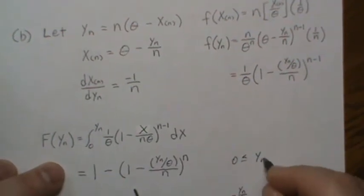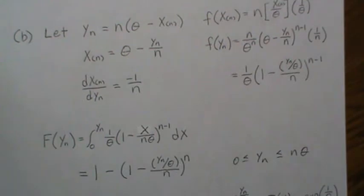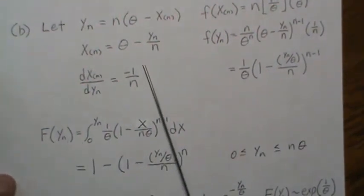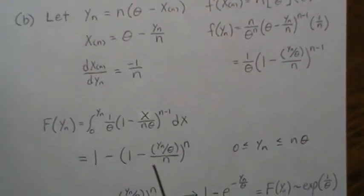y_n goes from zero to n theta. So now this is the CDF of y_n, which is this quantity here.